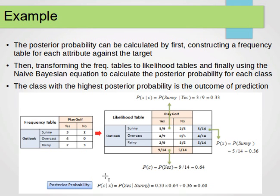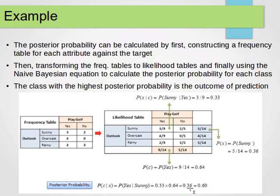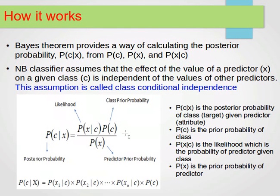Now, let's compute the probability of yes given the day is sunny. We apply probability of C given X: we multiply the probability of sunny given yes (3 over 9) by the probability of yes (0.64), and divide by the probability of sunny (5 over 14, which is 0.36), and that gives us 0.6. This is a direct application of the Bayes equation, and probabilities are multiplied because of the independence assumption.